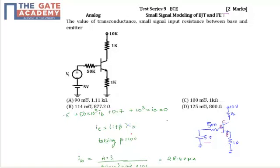So next, IE, we have the formula: 1 plus beta into IB. So beta is 100. So I equals 101 into IB. So next we don't know the value of IB.